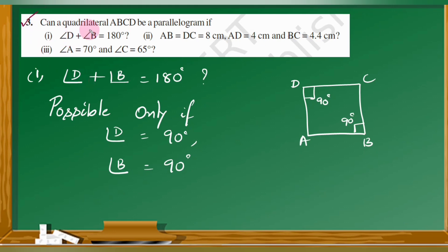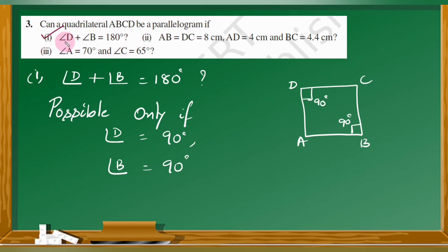Question number three: Can a quadrilateral ABCD be a parallelogram? We have three conditions to check whether a quadrilateral can be converted into a parallelogram. First one: angle D plus angle B is equal to 180 degrees. If we add angle D and angle B and get 180 degrees, let us check.